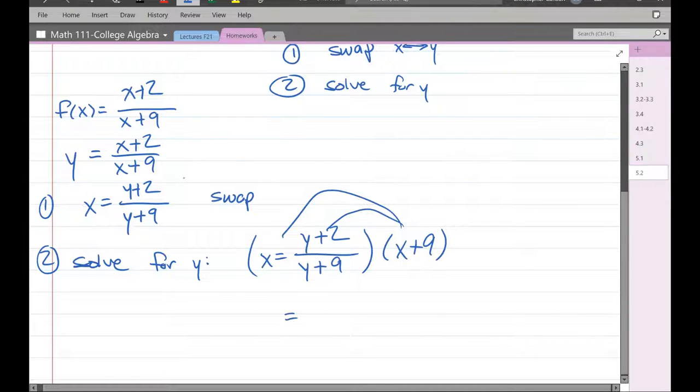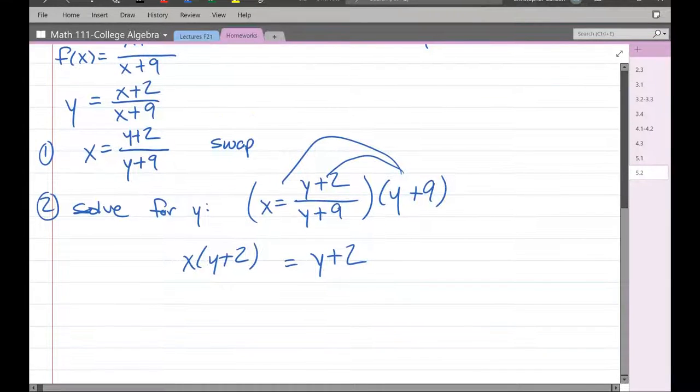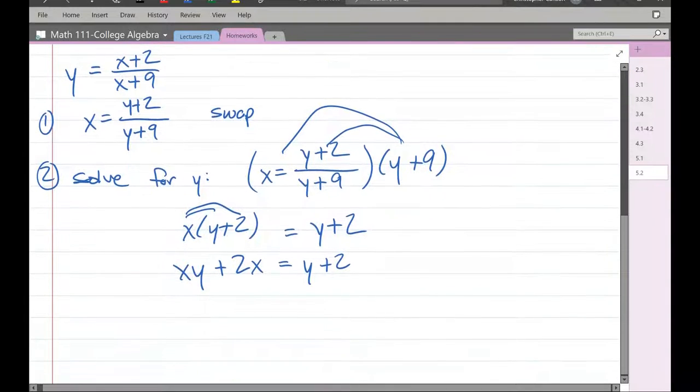Because we have to multiply both sides. The right side, the reason we did this is because we just have y plus two. It's going to cancel the entire denominator. The left side, I said the right thing and wrote the wrong thing. Y plus nine is what we're multiplying by. The left side is x times y plus nine. So I'm just going to write it. Now I'm going to distribute my x to both terms. xy plus 2x equals y plus 2.